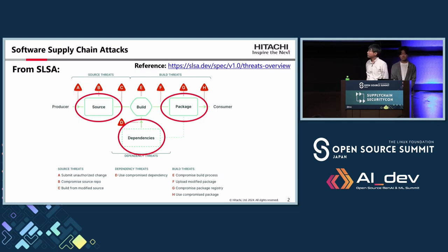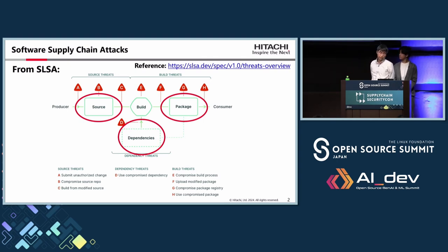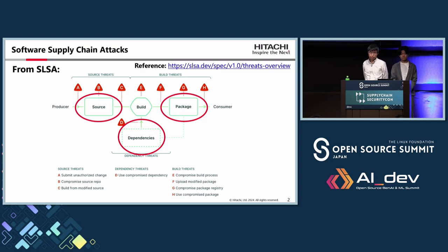This XZ Utils backdoor is a little different from other software supply chain attacks. As noted here, an unauthorized change is one kind of threat. But in this case, the source code was changed with authorized rights — because the attacker was a maintainer.